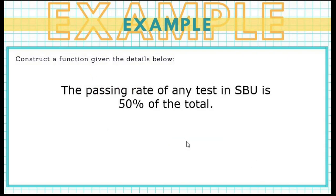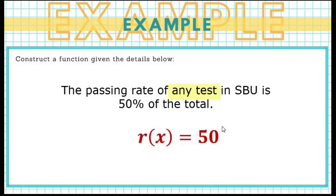Next example: the passing rate of any test in SBU is 50% of the total. This is an example of a constant function because of the keyword 'any test,' meaning it is true to all — it is synonymous to constant. If it is true for any test, then it is true to all and it will not change. So we represent this as r of x equals 50, disregarding the unit of measurement which is percent.